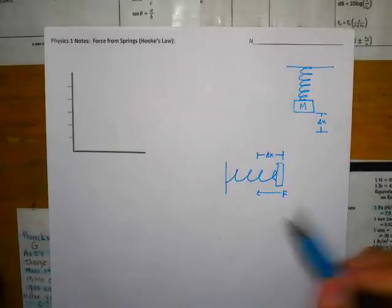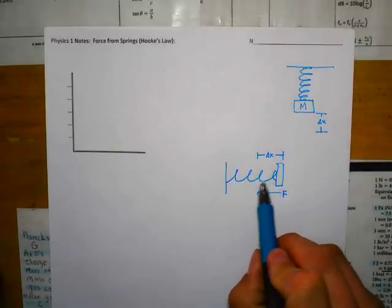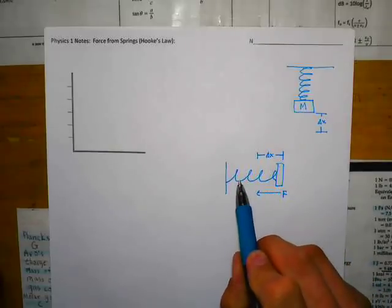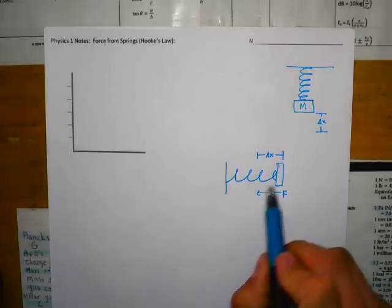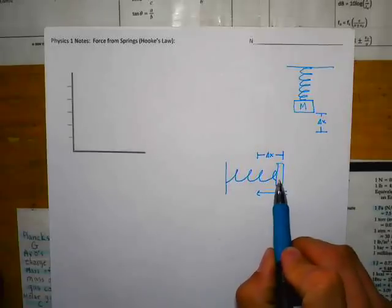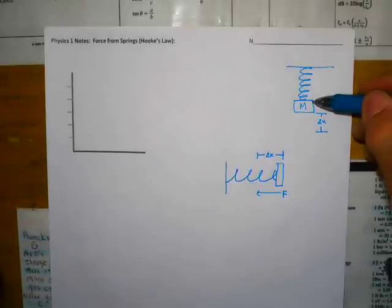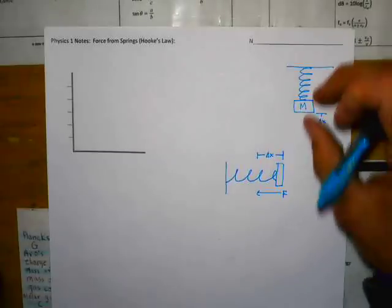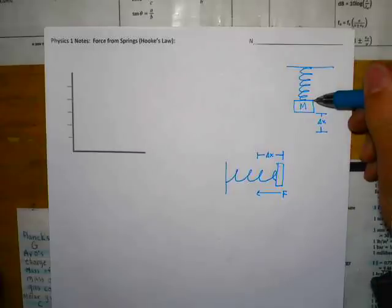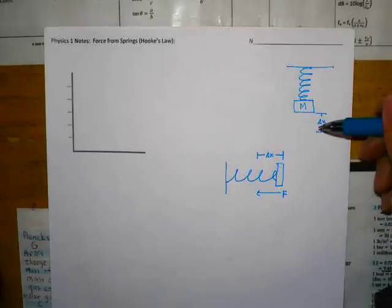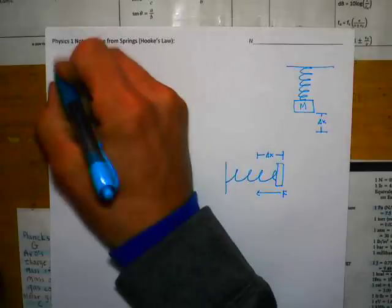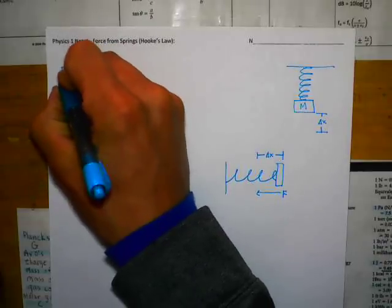The more you depress the spring, the more force you need. It's actually not a constant force — it doesn't take much at first and then that force increases. Same here: if you pull down on the spring, initially it's pretty easy to stretch, but it gets harder and harder as you apply more force.